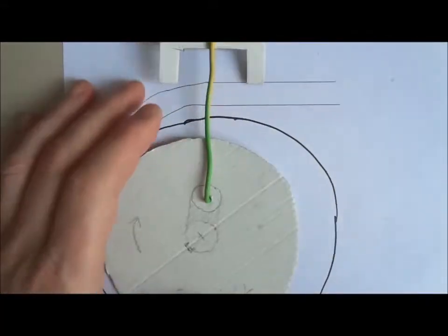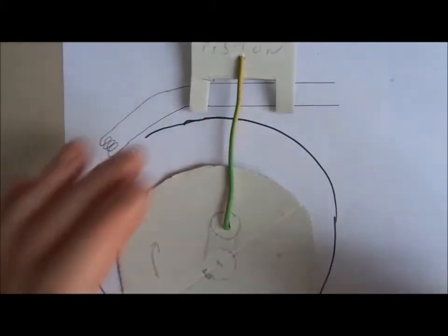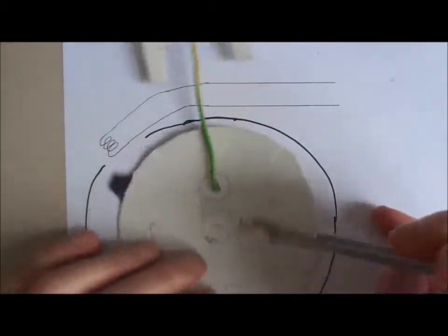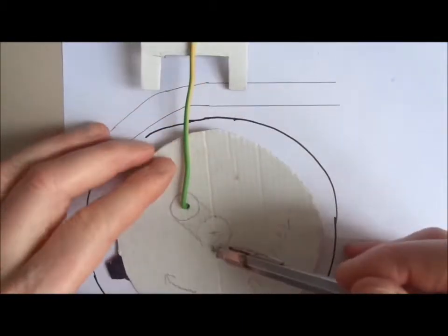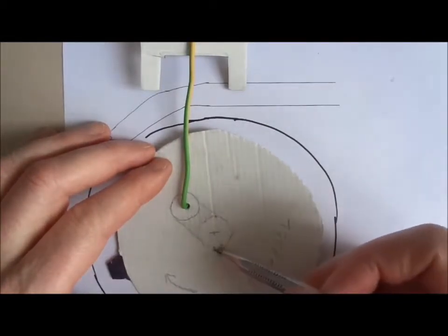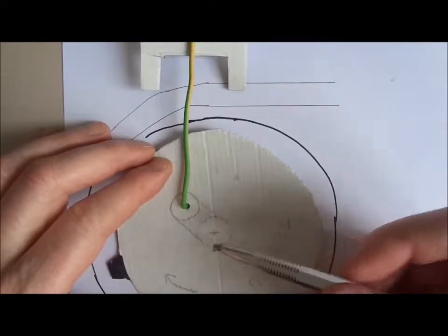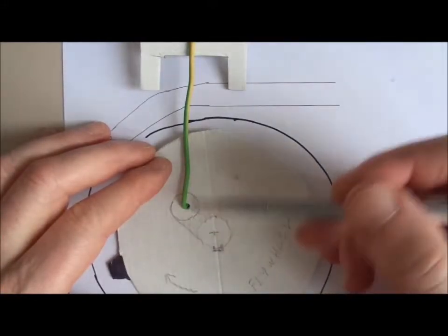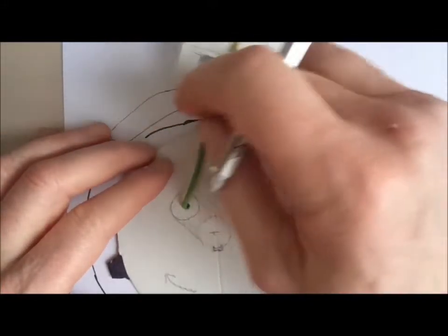And over the stator is the flywheel, lined up with the end of the crankshaft with a key to fix it. Fixed on the crankshaft is the connecting rod, then the piston.